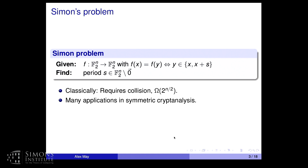Here is Simon's problem — perhaps a perfect problem for this institute. You are given an n-bit function with a promise: it is a two-to-one function. You get a collision whenever you are at the period S away, meaning x and x plus S collide if and only if they differ by S. Your goal is to find this period. This problem demonstrates the impressive power of quantum computing: classically there is a lower bound of 2^(n/2), but quantum algorithms solve it in polynomial time. Surprisingly, it has many applications in symmetric cryptanalysis.